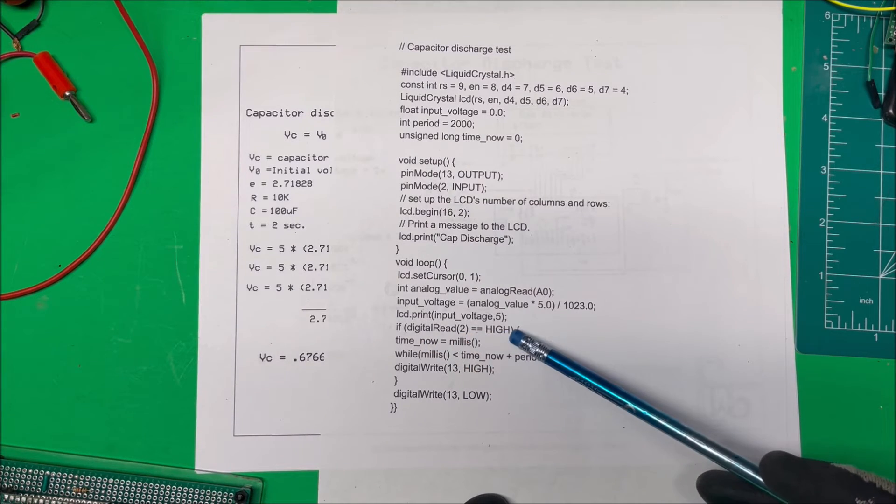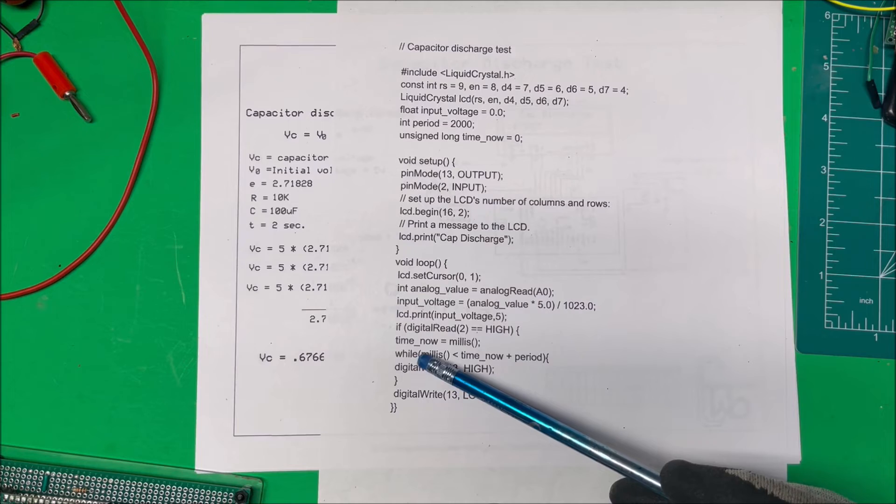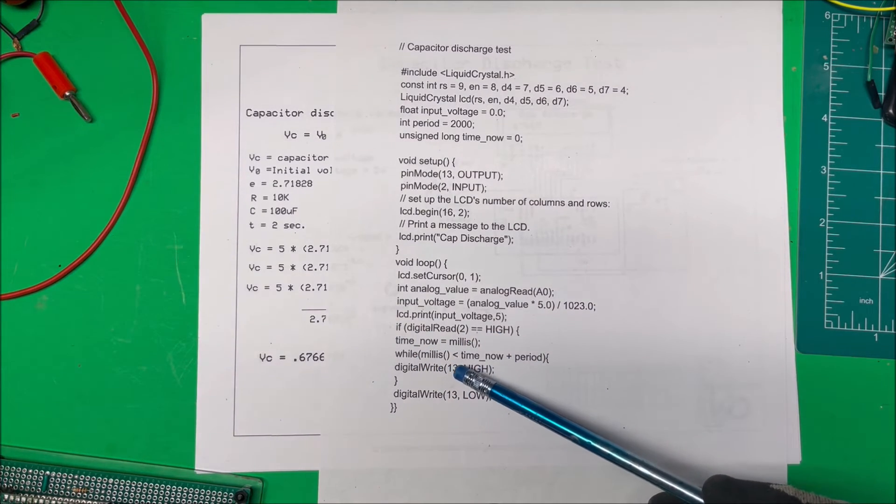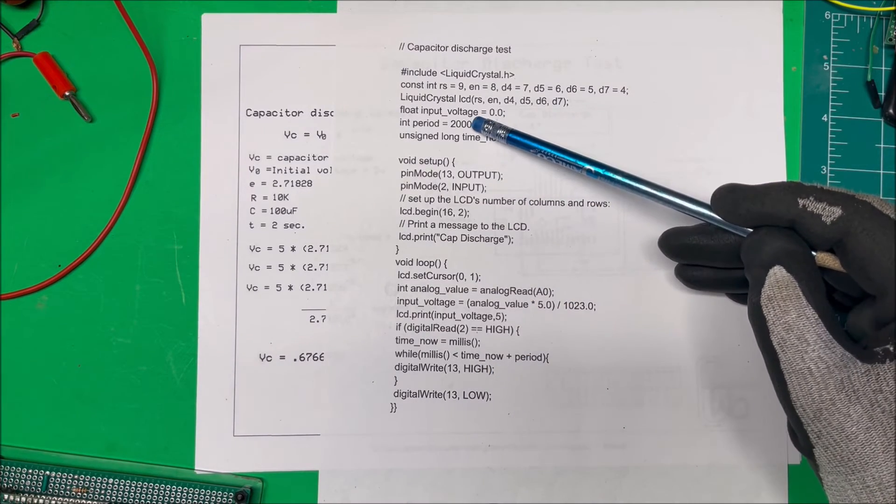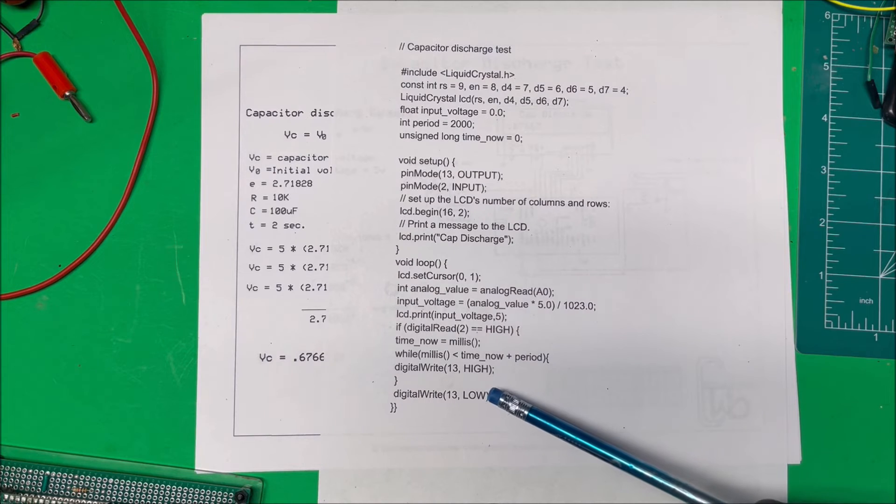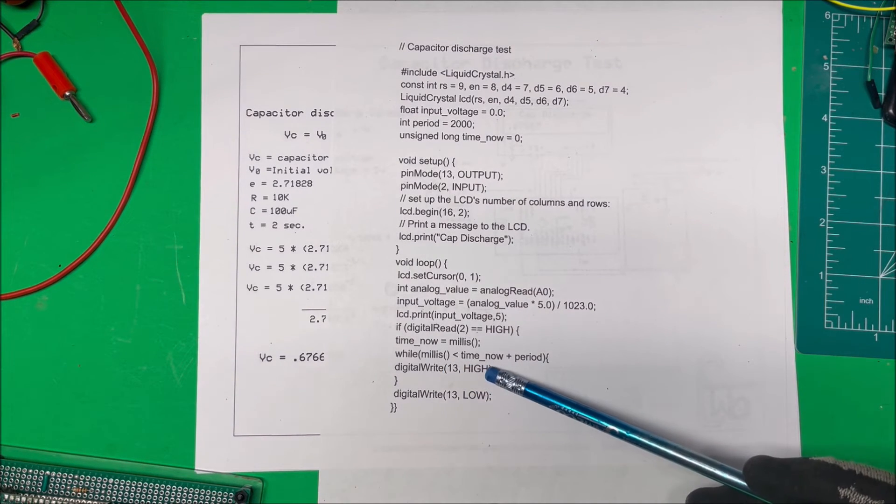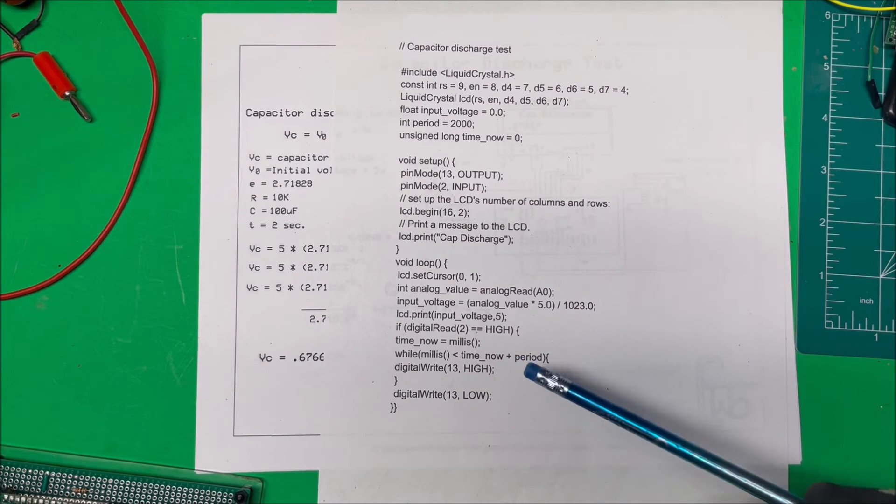And then we digital read, if we read the pin two is high, I push the button, then we go through our millie function thing here. So while millis are less than the time now and the period, this is our time now with zero here and 2000 milliseconds. If the digital write to 13 is high, then we write it low. After the two seconds there.